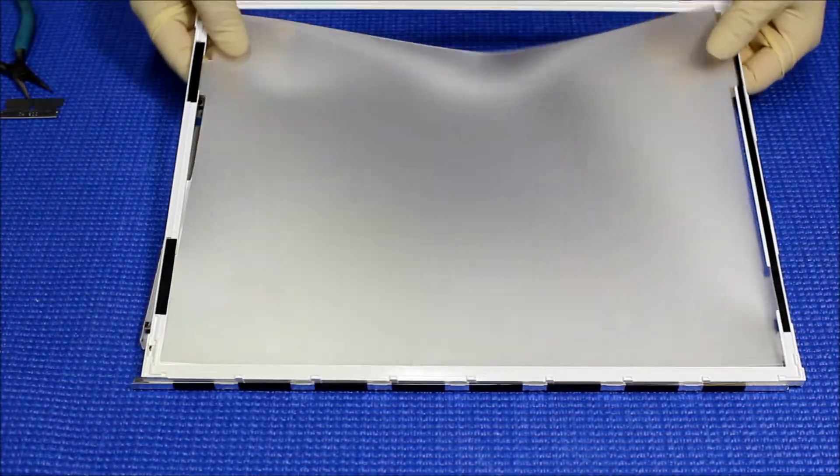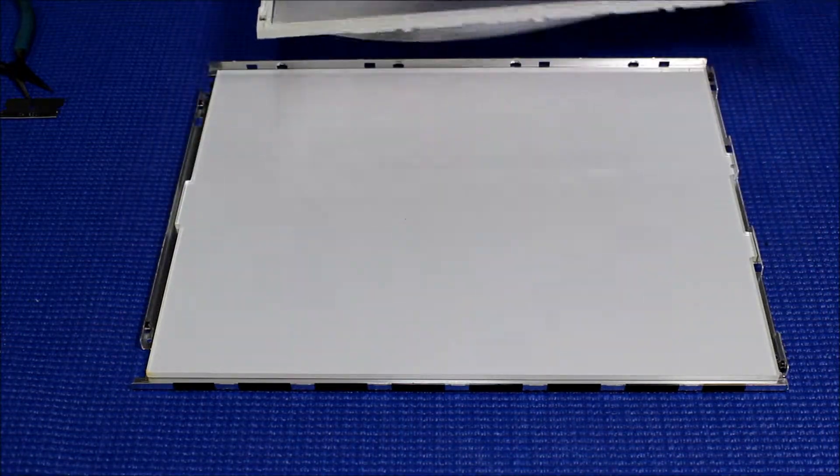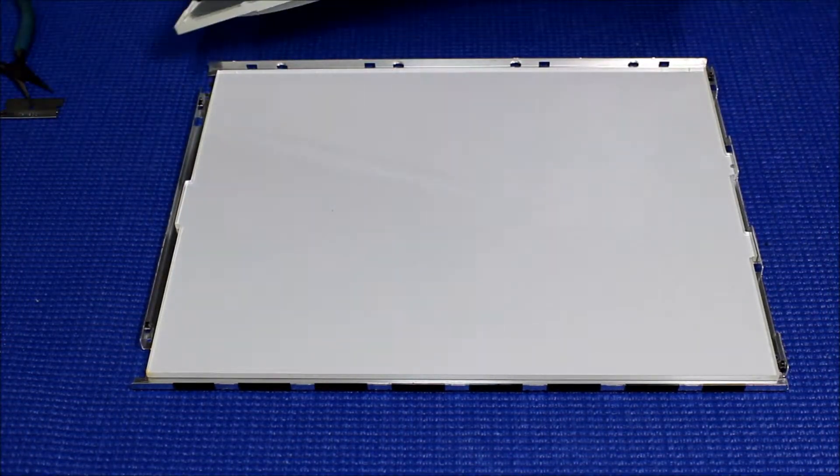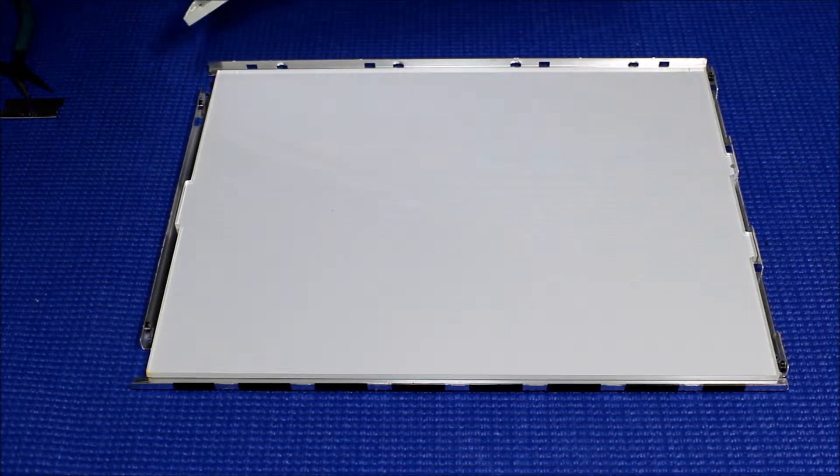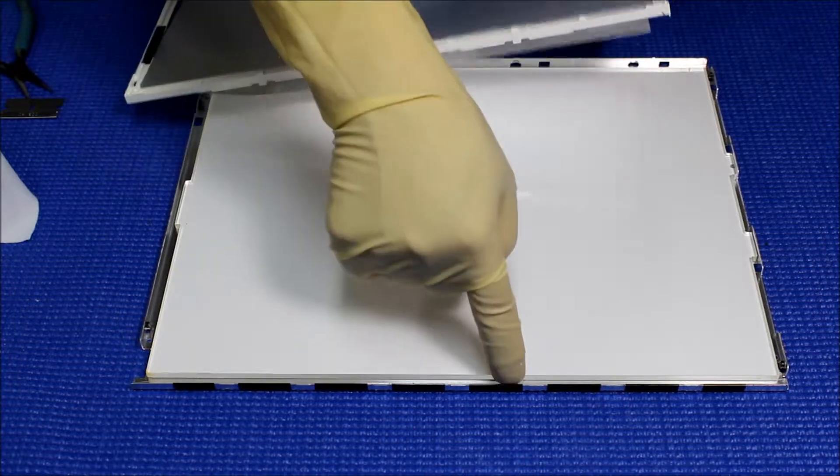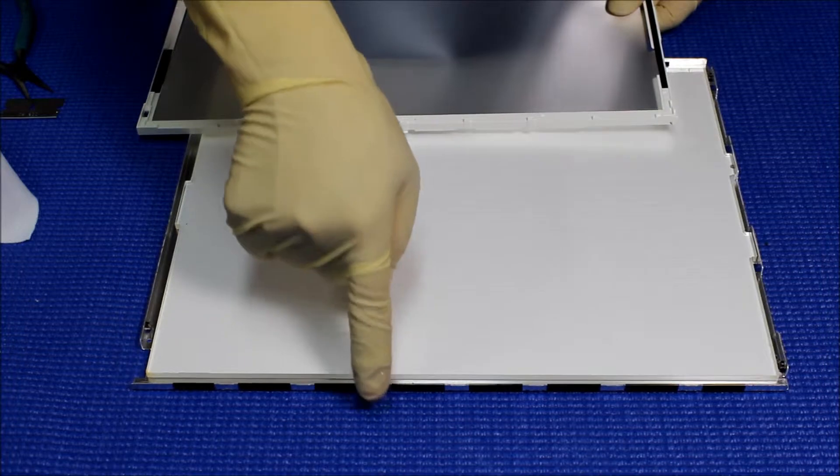Now we just take a look at the plastic diffusion sheet we just took out. Let's examine the structure of this screen and how the LED should be mounted. As you can see, when we take out the plastic, it was inside the metal frame, so we couldn't mount it directly to the aluminum frame.